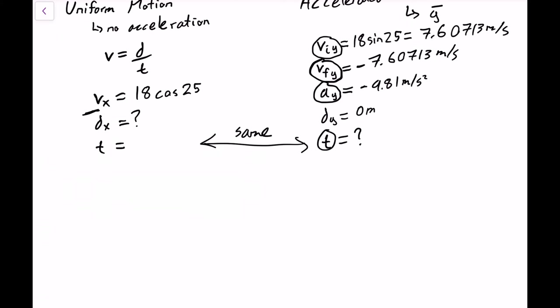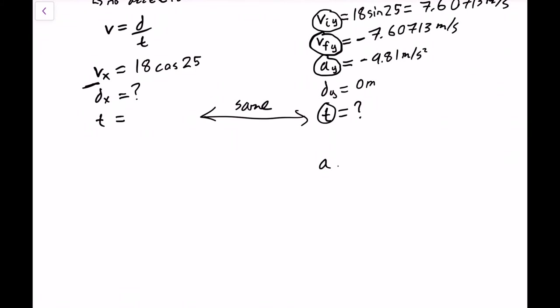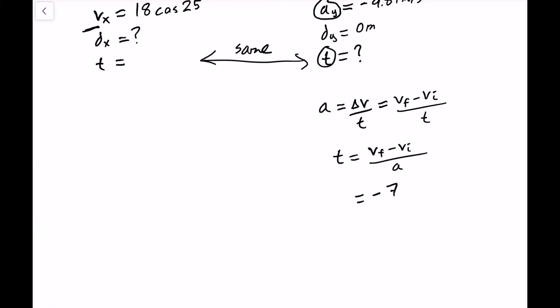So we need to figure out which equation has VI, VF, A, and T in it. And this is a bit of a tricky one, because the VI and VF are hidden in the delta V. And so this is actually VF minus VI, final minus initial velocity divided by time. So we can rearrange this to get time is equal to VF minus VI divided by the acceleration. So this is negative 7.607 minus 7.607, or we also could have just multiplied it by 2, divided by negative 9.81 meters per second squared. Here, of course, we're in meters per second. And we get a total time of 1.55 seconds.